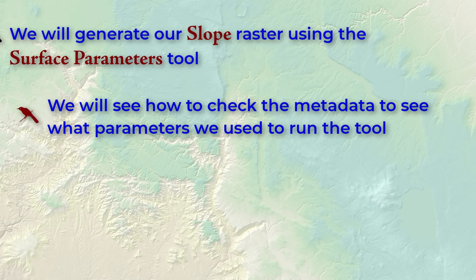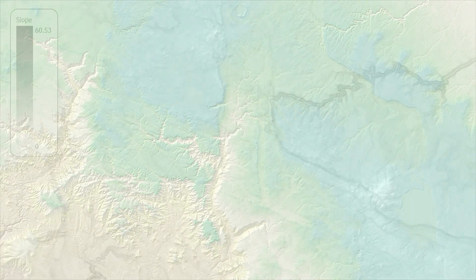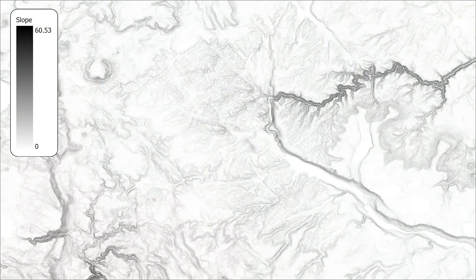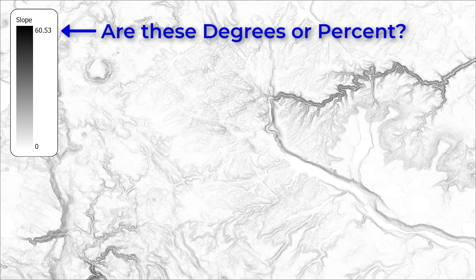For example, suppose you generate your slope raster and then you forget whether you created it in degrees or percent. You can find this out by looking at the geoprocessing history in the metadata.